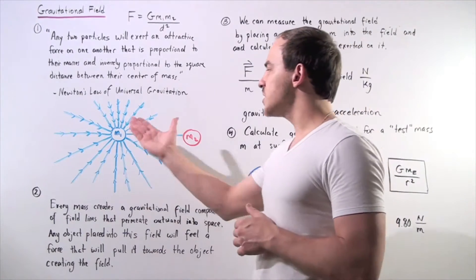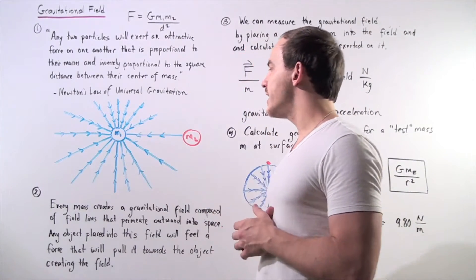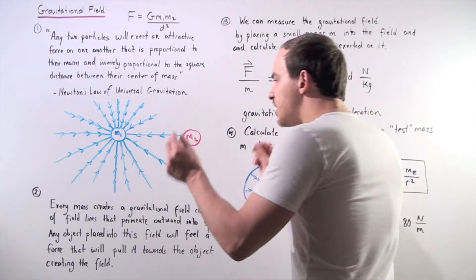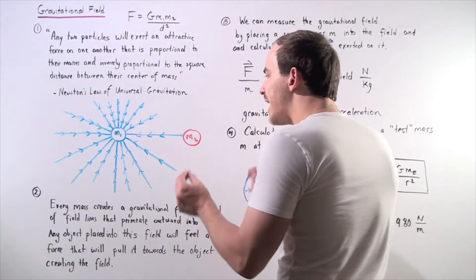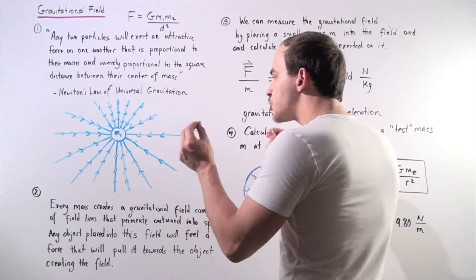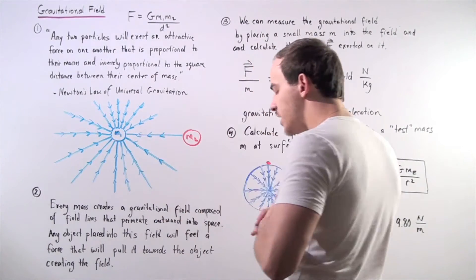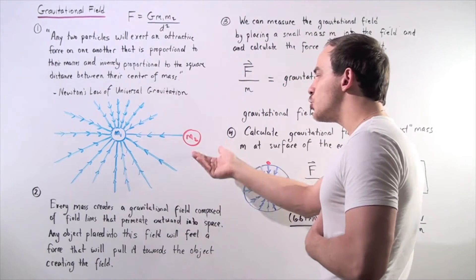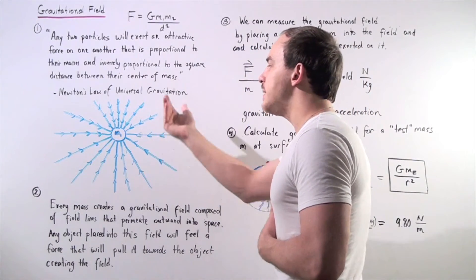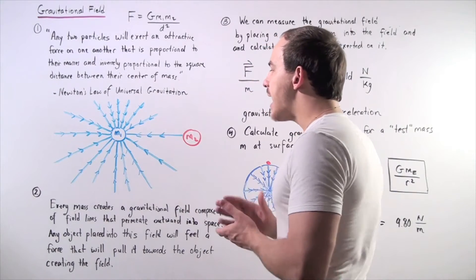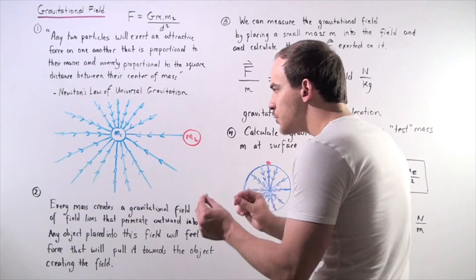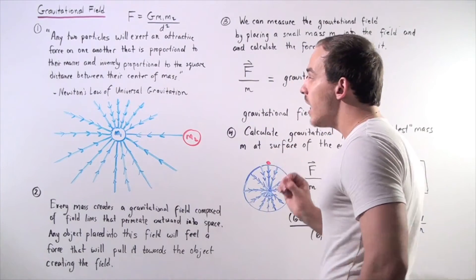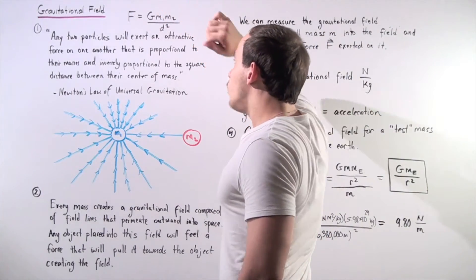So for example, we have object number one with mass m1 and object number two with mass m2. Now these two masses will create a force, will exert an attractive force on one another. In other words, m1 will create a force on m2 and m2 will create an equally magnitude force on m1.